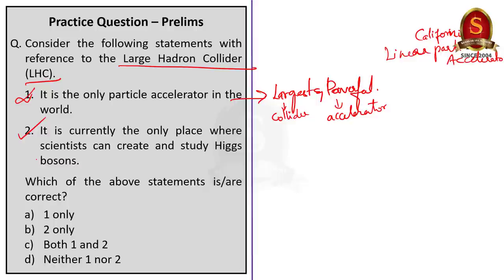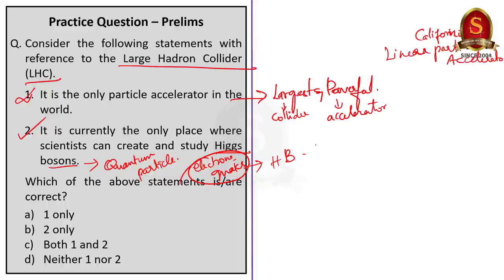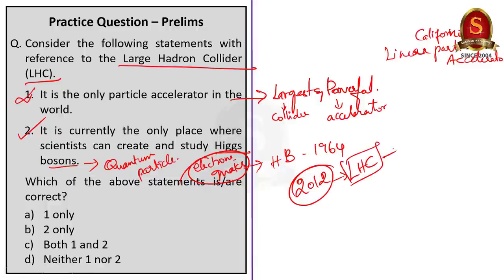The Higgs boson is the quantum particle associated with the Higgs field, which gives mass to other fundamental particles like electrons and quarks. The Higgs boson was proposed in 1964 by Peter Higgs, François Englert, and four other theorists. In 2012, scientists confirmed its existence through experiments at the LHC, leading to the 2013 Nobel Prize in Physics being awarded to Higgs and Englert. Currently, LHC is the only place scientists can create and study Higgs bosons. The correct answer for this question is option B, statement 2 only.